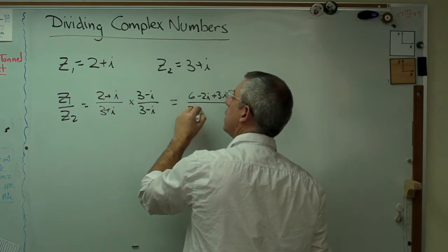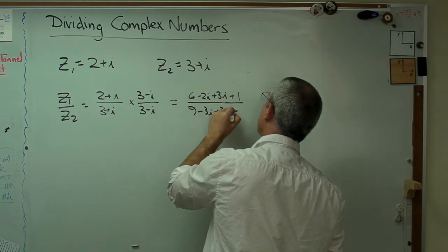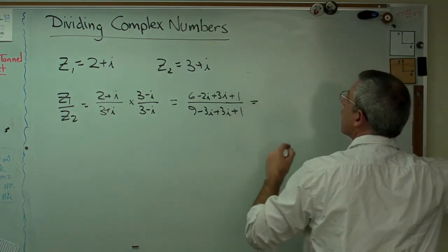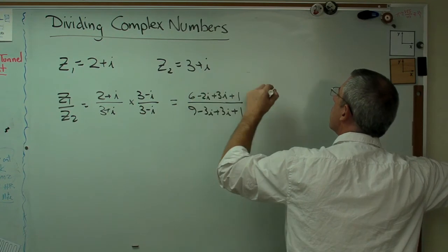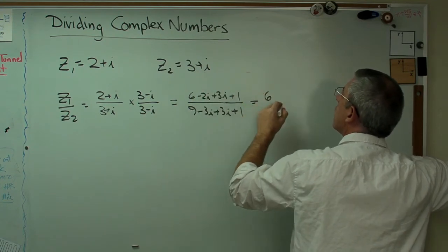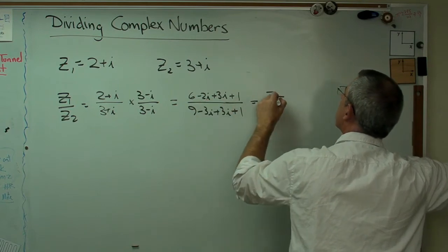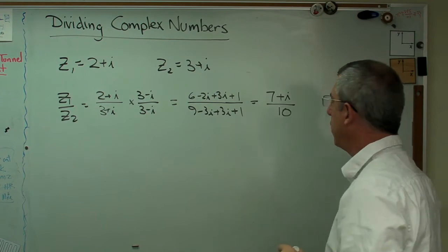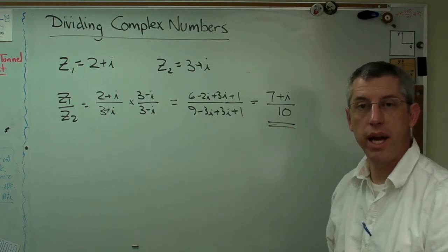I'll write this out. 9 minus 3i plus 3i plus 1. And that's going to work out to 6 minus 2i plus 3i, that's 6 plus 1—I'll make that 7—plus i over 10. So there it is. There's your answer right there. This is the way to do this in rectangular coordinates.